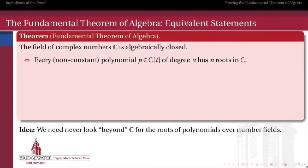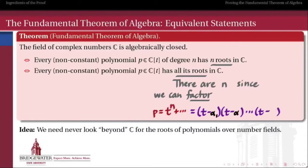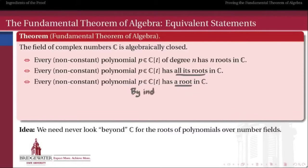Any non-constant polynomial whose coefficients are complex, if it has degree n, will have n complex roots. Every polynomial with complex coefficients will have all of its roots in the field of complex numbers, and we can factor it as a product of linear factors: (t minus root 1)(t minus root 2) and so on up to (t minus root n). So every polynomial of degree n will have n roots counted with multiplicity. But an even simpler equivalent statement is that every non-constant polynomial with complex coefficients will have at least one complex root, because if it has one complex root, we can show by induction that it has all of its roots in the complex field.